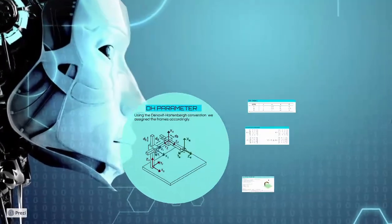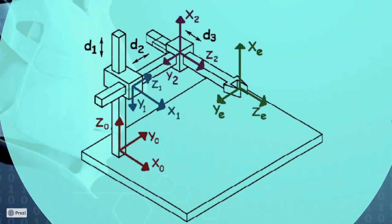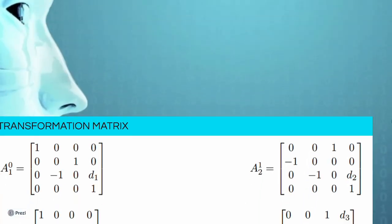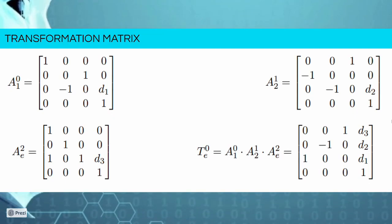Starting from the DH parameters, we choose the frame according to the Denavit-Hartenberg convention. We then reported the result in this DH table, and we used to compute the transformation matrix.